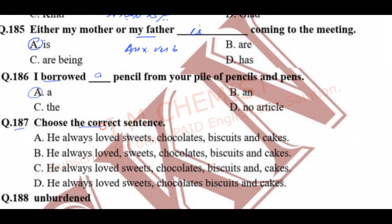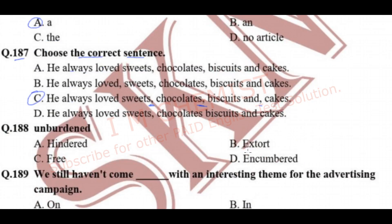Question number 186: 'I borrowed this pencil from your pile of pencils and pens.' Question number 187: choose the correct sentence — 'He always loved sweets, chocolates, biscuits, and cakes.' Option C is correct. We should always put a comma whenever we introduce a list of items.